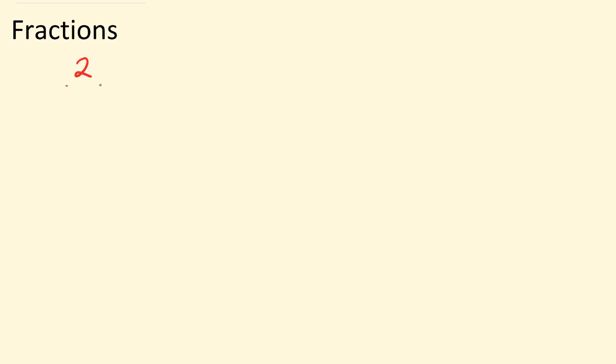Say for example, we have two fifths and we are adding one fifth. The first rule you need to remember is before you add fractions, the denominators need to be the same. So over here we have a five and a five, so both denominators are five.